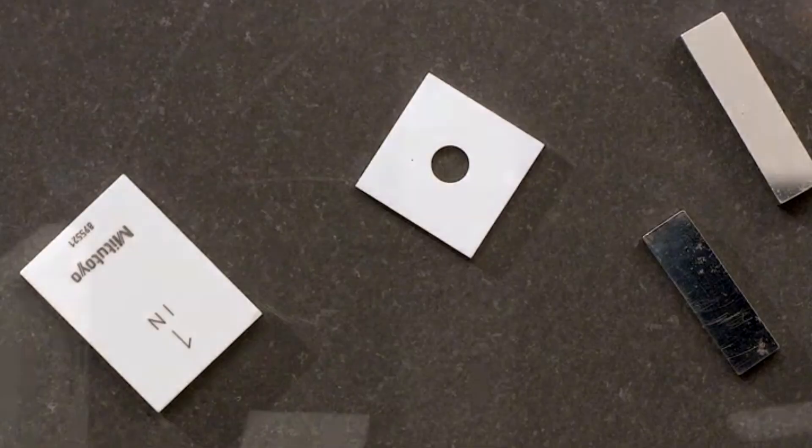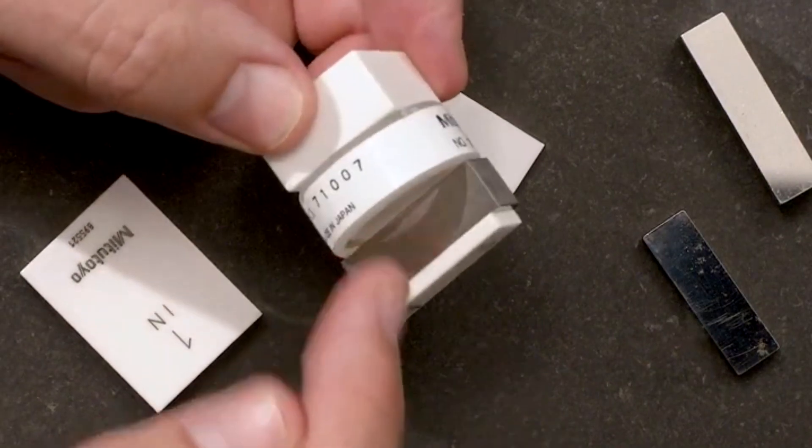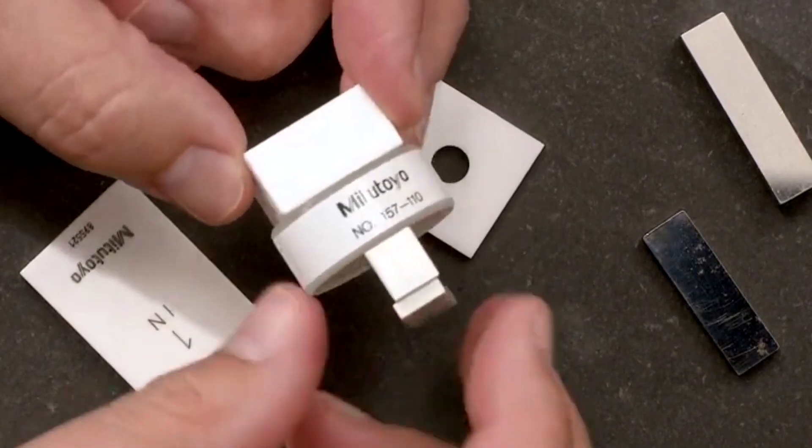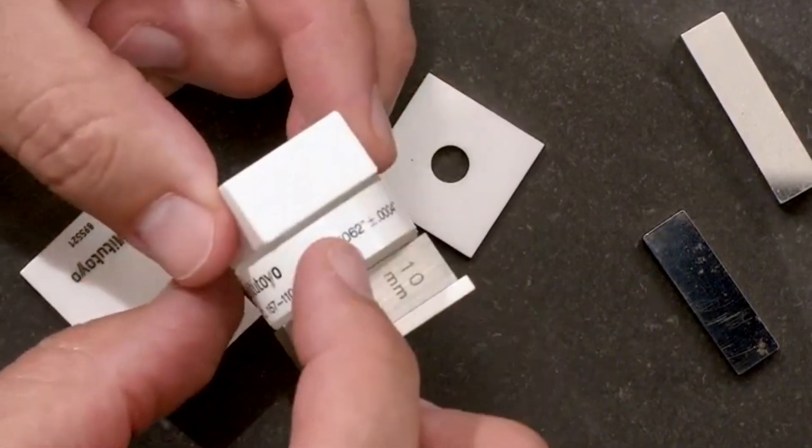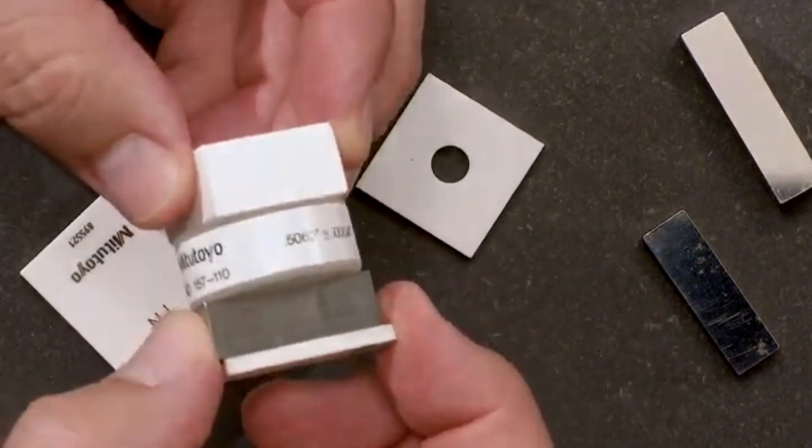Steel to steel, ceramic to ceramic. I've rung together three different Gauge Blocks: Rectangular, steel, ceramic, and optical flat. All four of those blocks are rung together nice and tight.